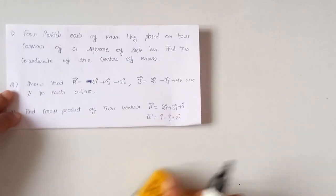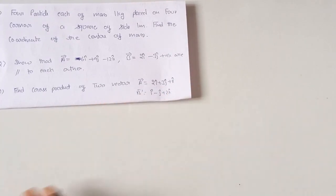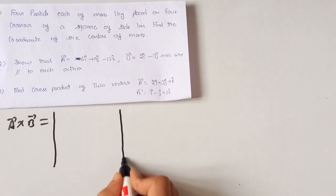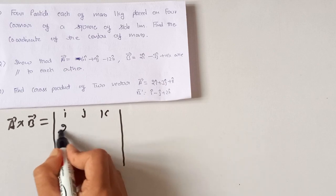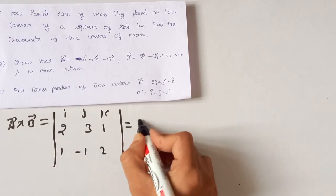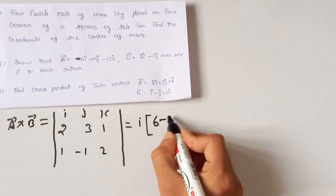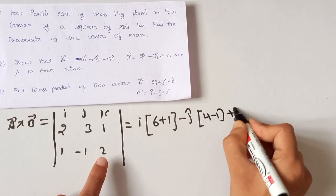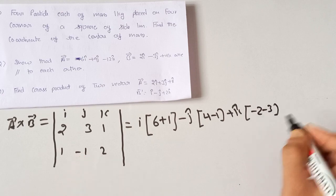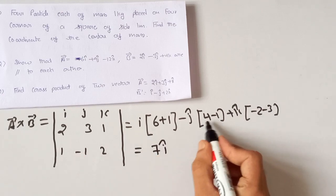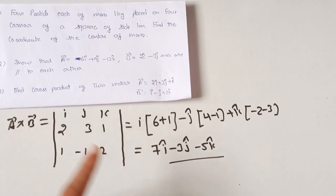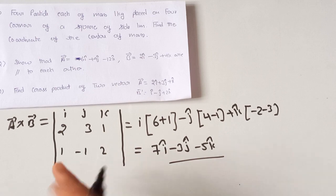Our next numerical: find the cross product of two vectors A = 2i + 3j + k and B = i − j + 2k. We use the determinant with rows [i, j, k], [2, 3, 1], [1, −1, 2]. Solving: i(3×2 − 1×(−1)) − j(2×2 − 1×1) + k(2×(−1) − 3×1) = i(6+1) − j(4−1) + k(−2−3) = 7i − 3j − 5k. This is the cross product of these two vectors. I hope all these key points and numericals are clear to you. Thank you and have a nice day.